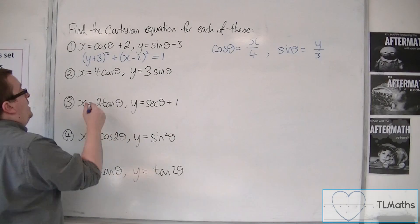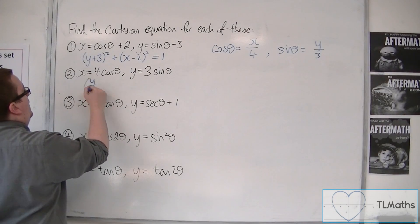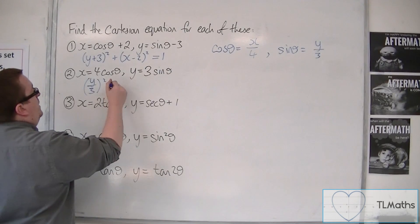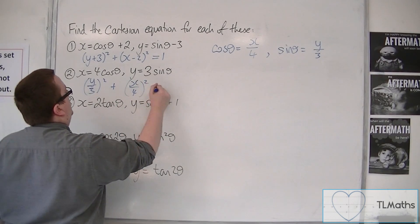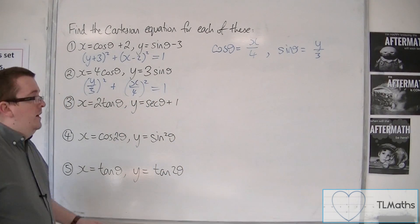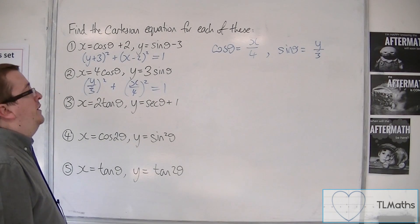So that means that y over 3 squared, so sin squared, plus cos squared is equal to 1. And that is my Cartesian equation.